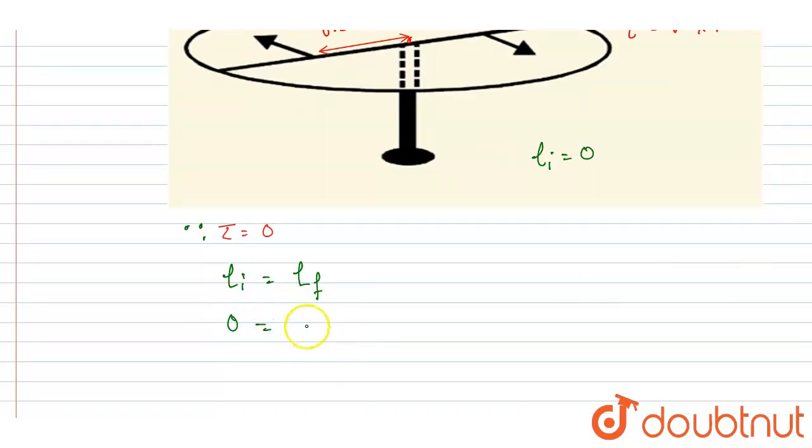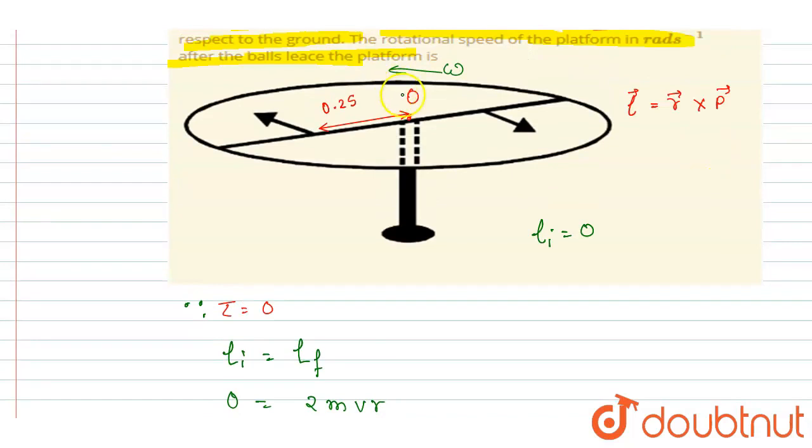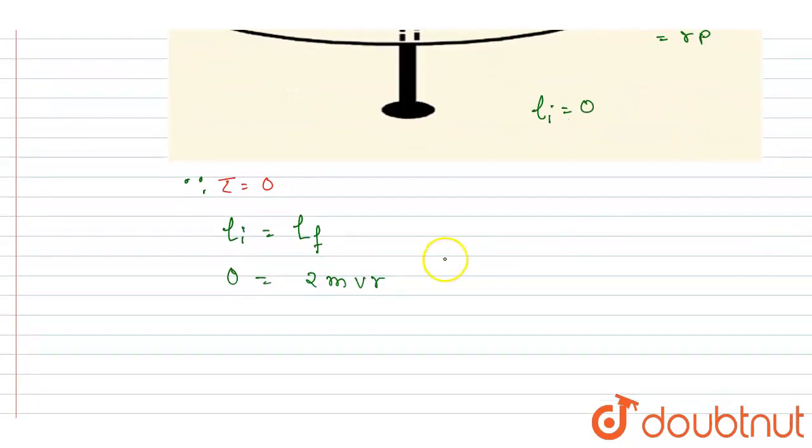Initial angular momentum is zero. And final, if you see, the two balls are having velocity v at a distance r, where r is this, and this is perpendicular. So if I write down perpendicular, sine 90 degrees, it will be simply p times r because they are at an angle of 90 degrees with each other.